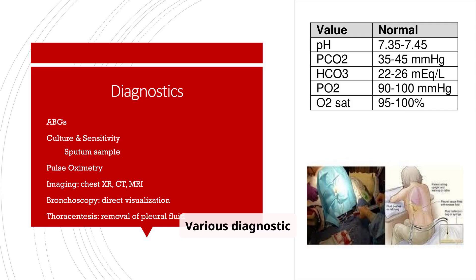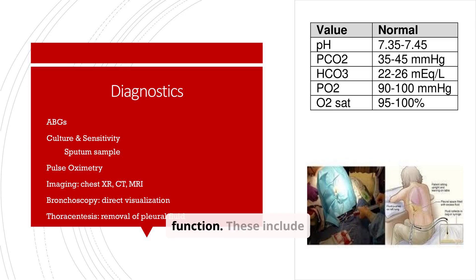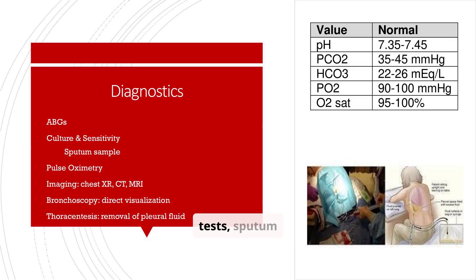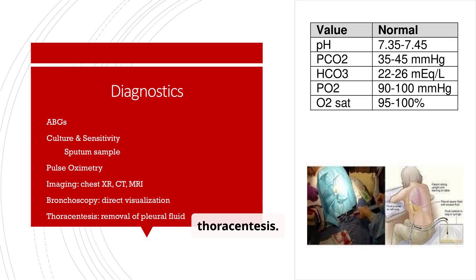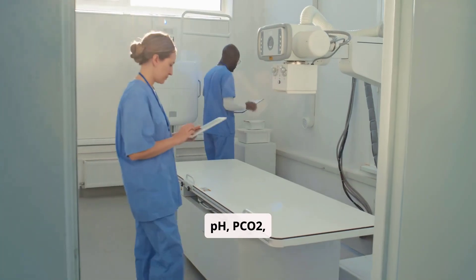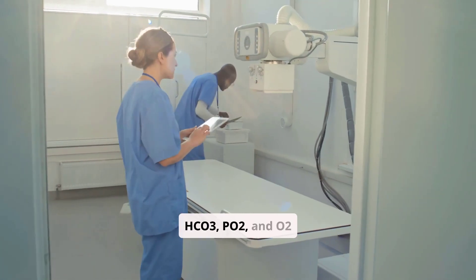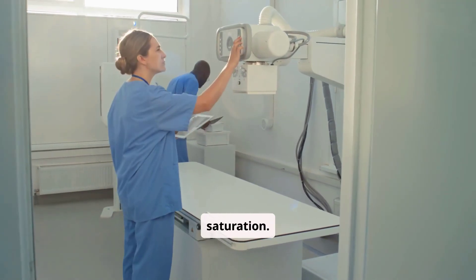Various diagnostic procedures are used to assess respiratory function. These include ABGs, culture and sensitivity tests, sputum samples, pulse oximetry, imaging, bronchoscopy, and thoracentesis. Remember the normal values for pH, pCO2, HCO3, PO2, and O2 saturation.